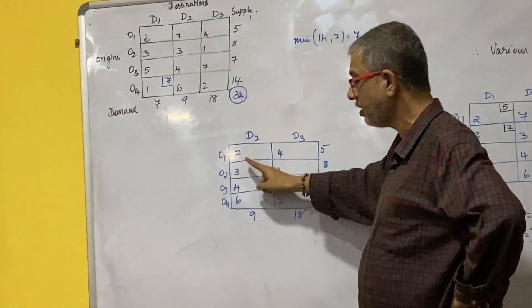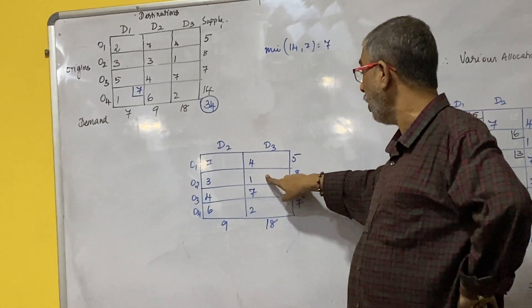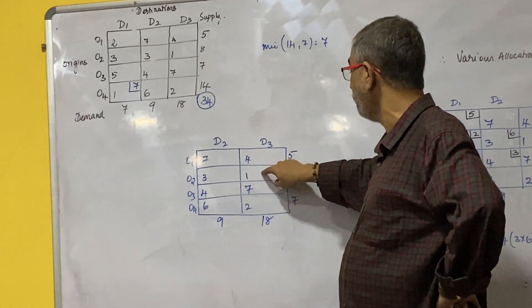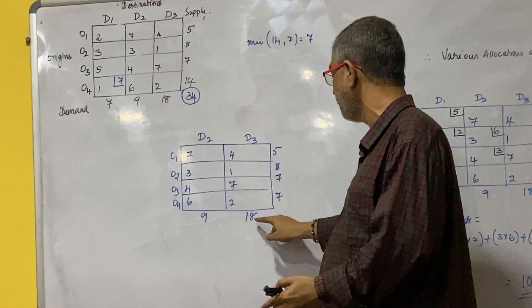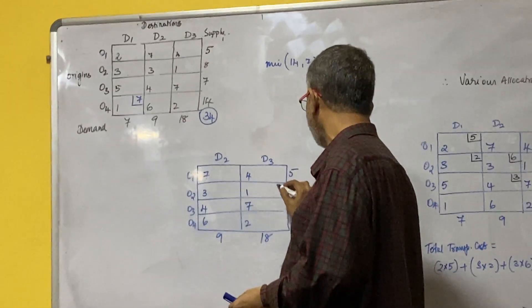In the reduced rate I again check which is the lowest cost, I can see one over here. Now I prefer this cell O2D3 minimum of 8 times 18. So I need to enter 8 over here accordingly.